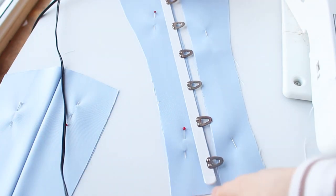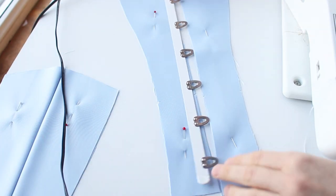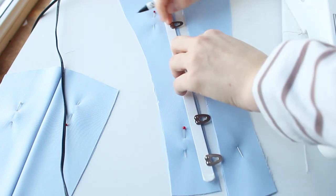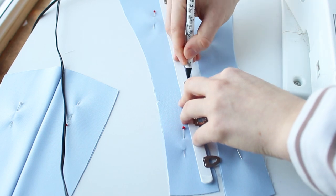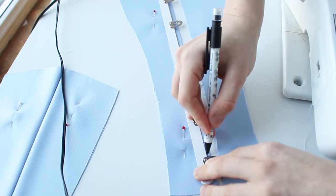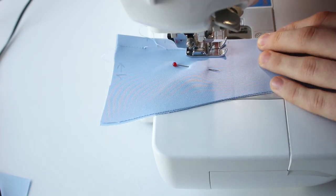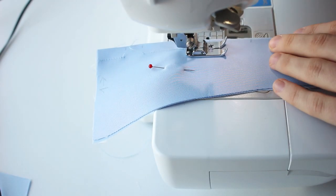After that I started sewing the corset together. First I installed the busk. I placed the hook side of the busk on the front panel and marked the hooks with a pencil.